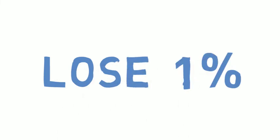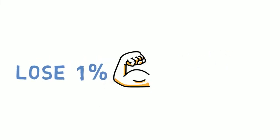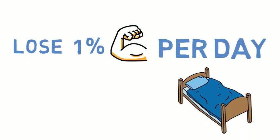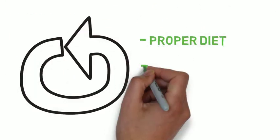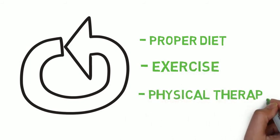Studies have shown that individuals lose roughly 1% of their overall muscle mass per day of bed rest. Typically, muscle atrophy can be reversed through proper diet, exercise, and physical therapy.